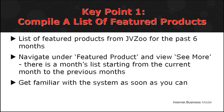Second, compile a list of featured products of the past six months. You can find this information under the Featured Products section in JVZoo. You are directed to a page where you can view the top picks for the past months. On the right side of the page, you can view See More, where there is a months list starting from the current month to the previous months. Click on the month and it brings you to the featured products of the selected month.